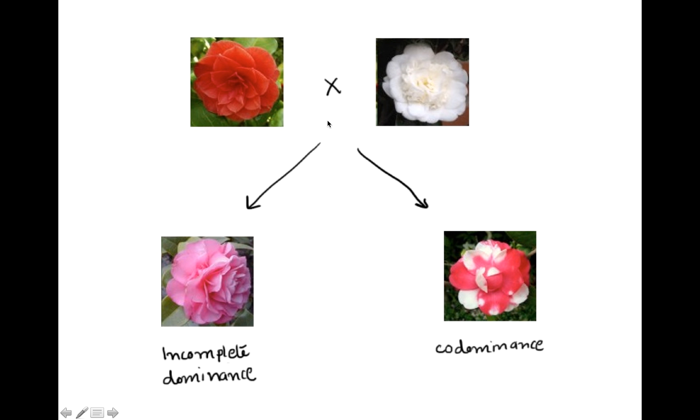And then the other possibility that we could see would be something like codominance, where we don't see a blending of red and white, but instead we see parts are red, like this flower, and parts are white, like this flower. So this is the distinction people make between incomplete dominance and codominance, but here, the main thing I'd like us to point out is that it's not just simple dominance. We see three different phenotypes: one, two, three, or in the other case, one, two, three.